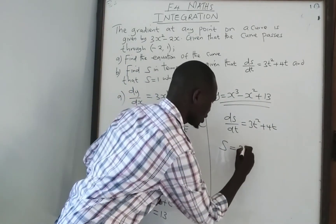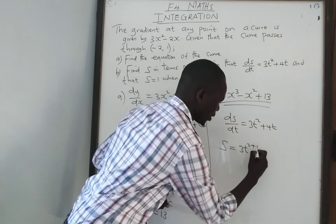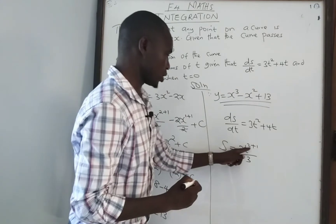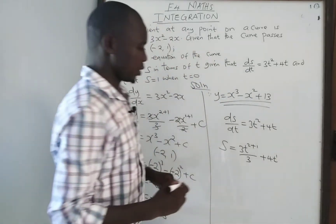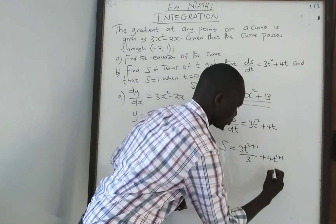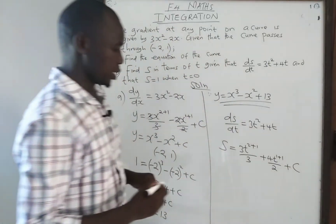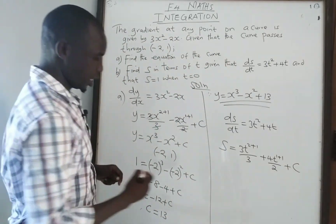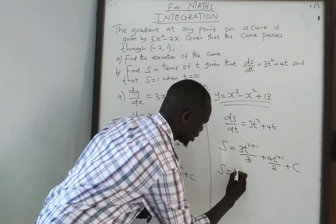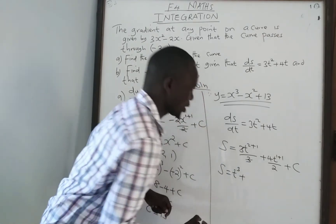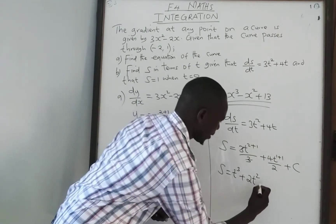Our s is going to be equal to the integral of 3t squared plus 4t. Under integration, we increase the power of t by 1 and divide by the new power: for 3t squared the new power is 3 (i.e., 2 plus 1), and for 4t the new power is 2. Simplifying, 3 cancels to give t cubed, and 4 divided by 2 gives 2t squared, plus constant c.